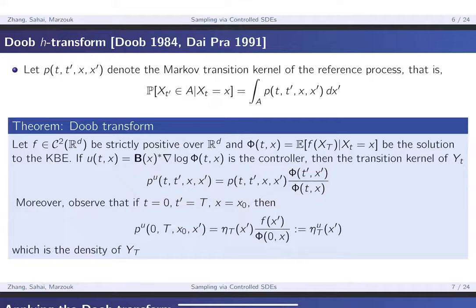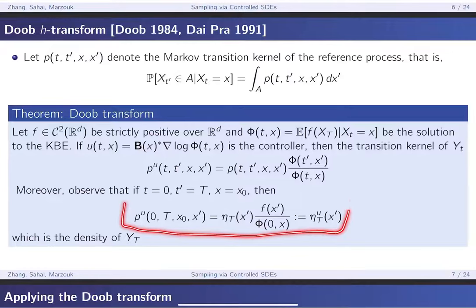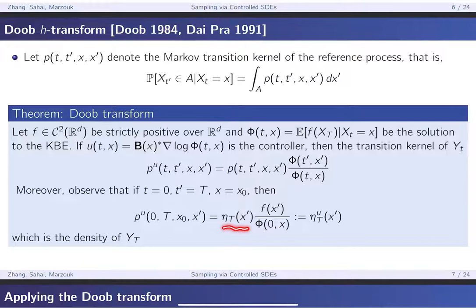In particular, pay attention to the special case where t = 0 and t' = T, starting from initial condition x₀. Without the controller, the system evolves into ηₜ. But with this controller, the distribution that the samples of the controlled SDE end up in will look like f(x) multiplied by the reference distribution ηₜ divided by φ(0, x₀). This tells us what the new density looks like if you apply this control.